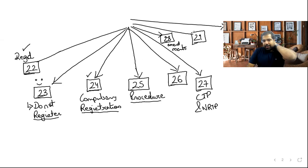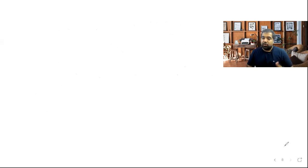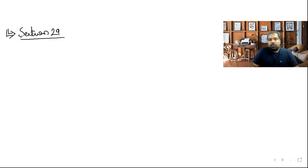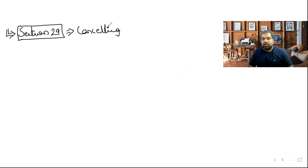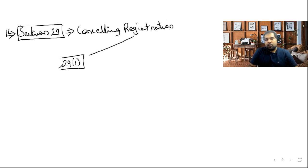Section 29: Cancellation of registration. You're already registered, supplying goods, filing returns — but something goes wrong. Cancellation is dangerous because if the GST officer cancels your registration, your ITC disappears. There are two sub-sections: 29(1) — voluntary cancellation, and 29(2) — suo motu cancellation by the officer.